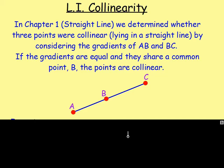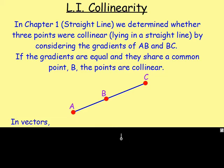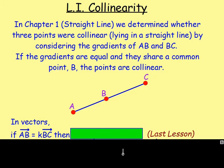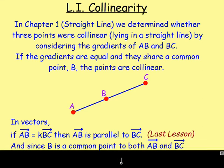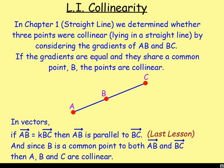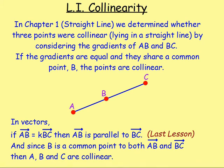What we've now got to do is consider the same thing, but with vectors. In vectors, if vector AB equals k·BC — so if AB is a multiple of BC — then you know that AB is going to be parallel to BC. This is something we looked at in the last lesson. And since B is a common point to both vector AB and BC, then you would say that A, B and C are collinear. So let's try some examples.